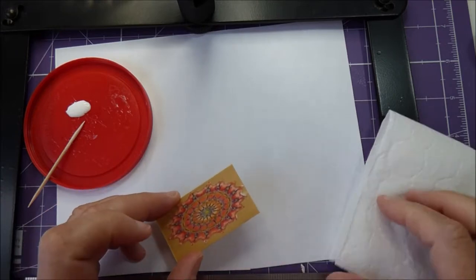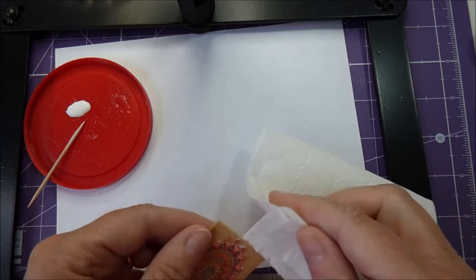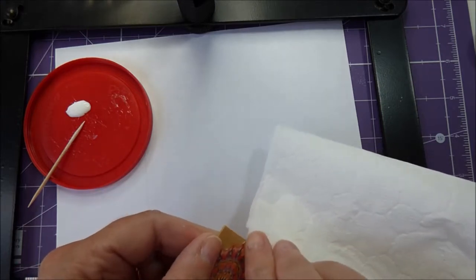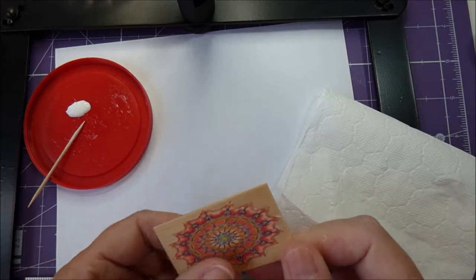Don't worry if there's a little bit of excess, just carefully wipe it off. The glue will dry clear so you won't see it. Leave that to dry.